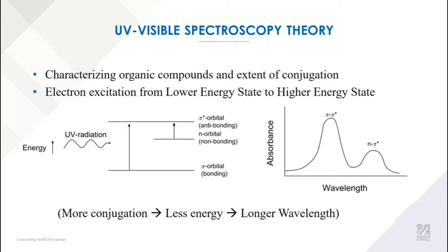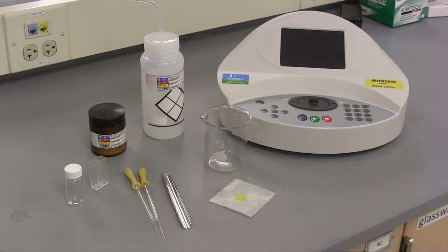Displayed are the common bonding and non-bonding excitations to the antibonding state. Materials for this lab will include a scintillation vial, cuvettes, pipettes, a spatula, solvent, a beaker, the UV vis spectrometer, and your sample.